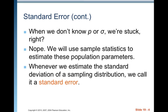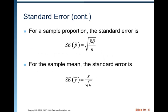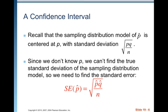Whenever we estimate the standard deviation of a sampling distribution, we call it a standard error. For a sample proportion, the standard error is SE(p-hat) = square root of p-hat times q-hat over n. For the sample mean, the standard error is SE(y-bar) = s over square root of n. Since we don't know p, we can't find the true standard deviation of the sampling distribution model, so we need to find the standard error.